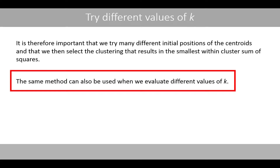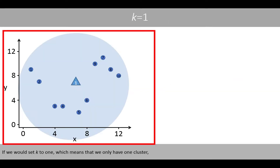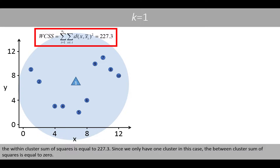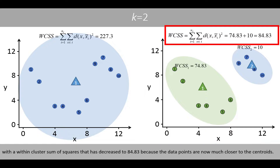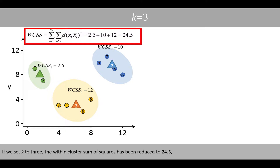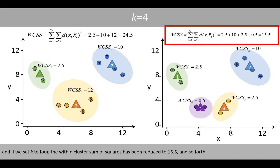The same method can also be used when we evaluate different values of k. If we set k to 1, meaning only one cluster, the within-cluster sum of squares is equal to 227.3, and the between-cluster sum of squares is equal to 0. If we set k to 2, the following two clusters are generated, with the within-cluster sum of squares decreased to 84.83 because the data points are now much closer to the centroids. If we set k to 3, the within-cluster sum of squares has been reduced to 24.5. And if we set k to 4, it has been reduced to 15.5, and so forth.